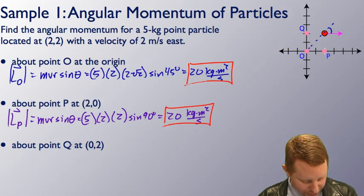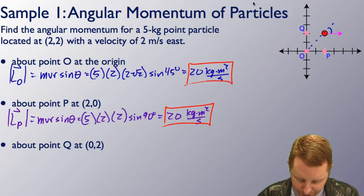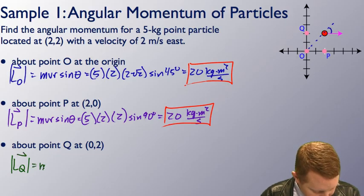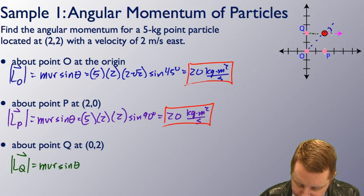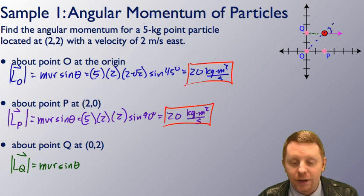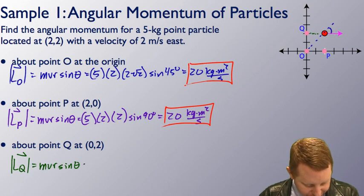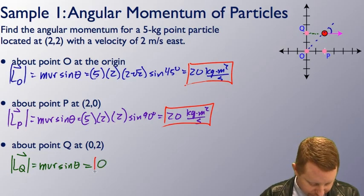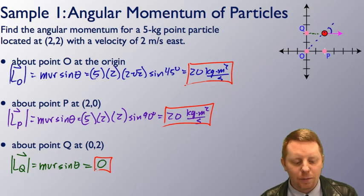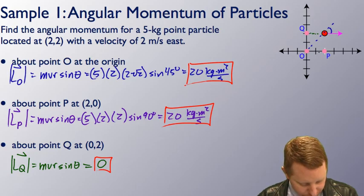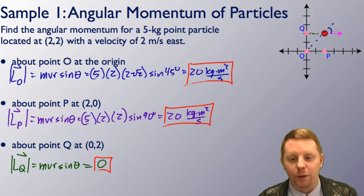Finally, let's find the angular momentum about point Q. The magnitude is MVR sine theta, but the position vector and velocity vector are in the same direction, which means the angle is zero degrees. The sine of zero is zero, so the angular momentum about point Q is just zero. You can see angular momentum depends upon your reference point — different values for Q compared to O and P.